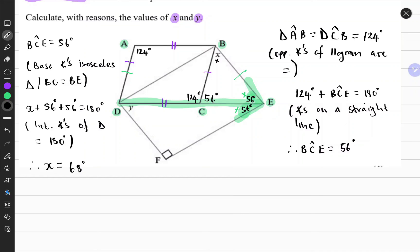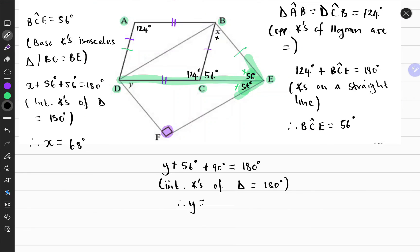Using the same property, we can find the value of y by the property of sum of interior angles of a triangle adding up to 180 degrees. Notice this is the right angle, so it's 90 degrees, which should give us 180 degrees. Solving for y, we get y to be equals to 34 degrees.